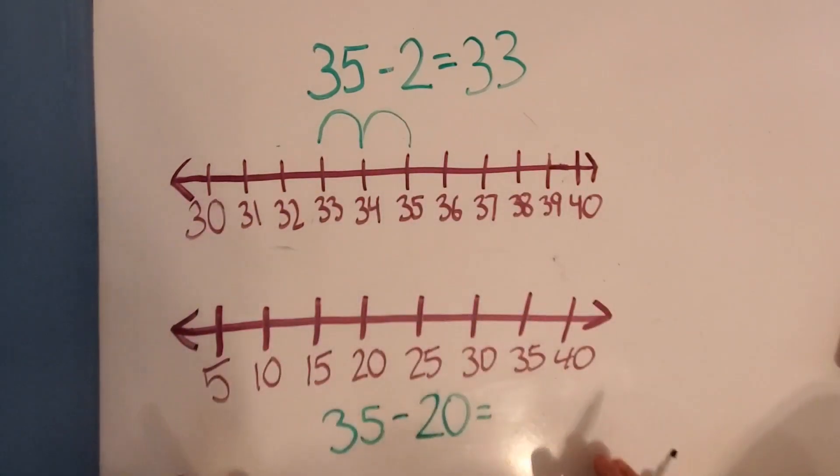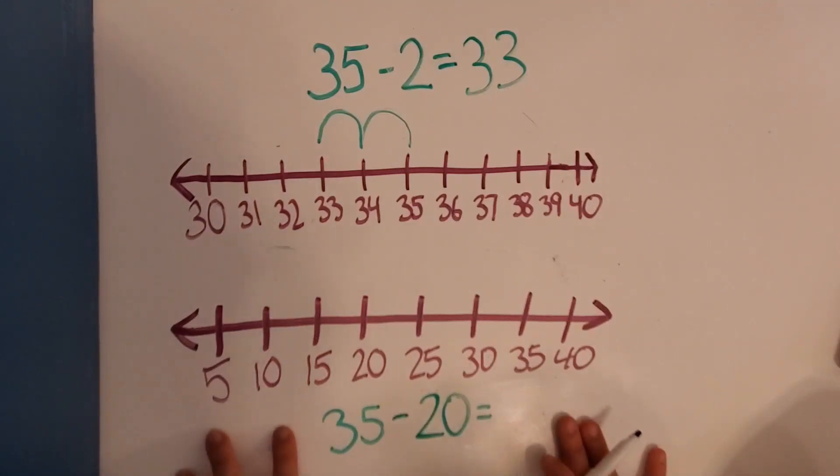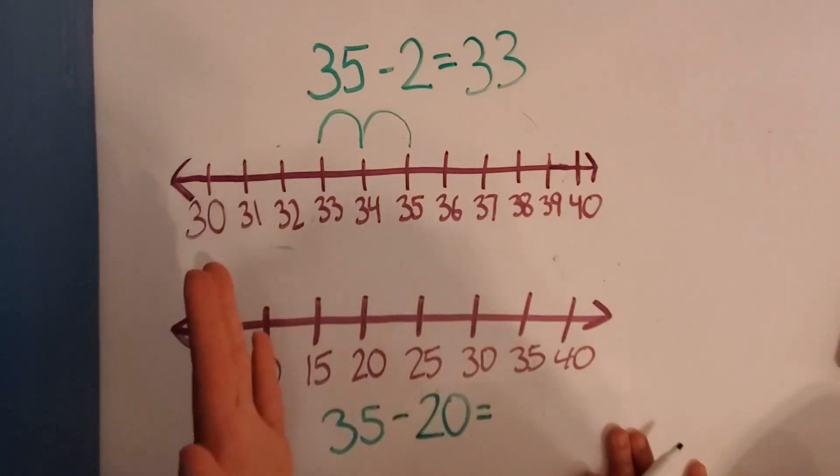Okay? Easy peasy, lemon squeezy, right? All right, now let's go down to this one. So we're going to start at 35 again. And then we're going to take away 20. How many 10s are in 20? 2, right?